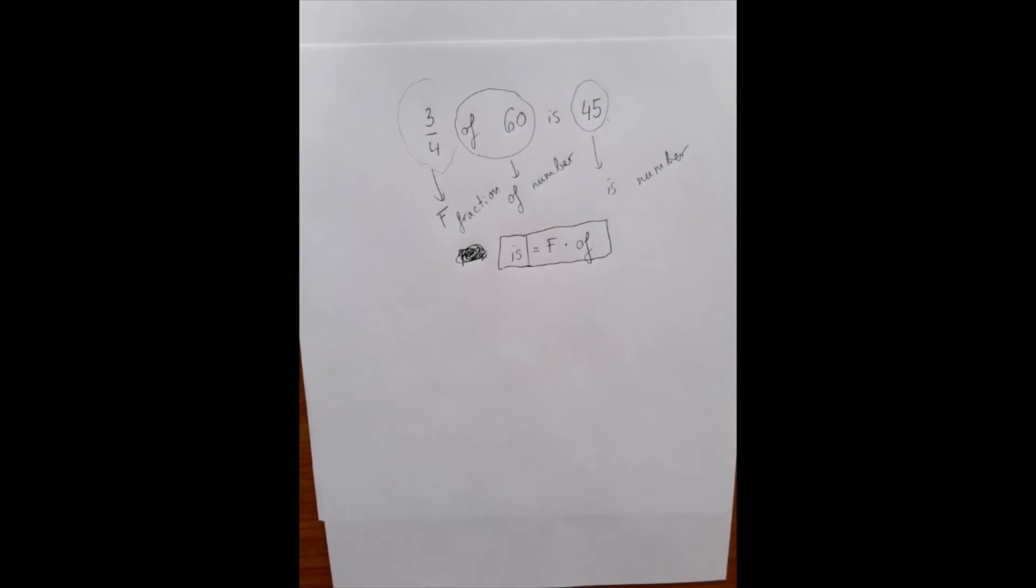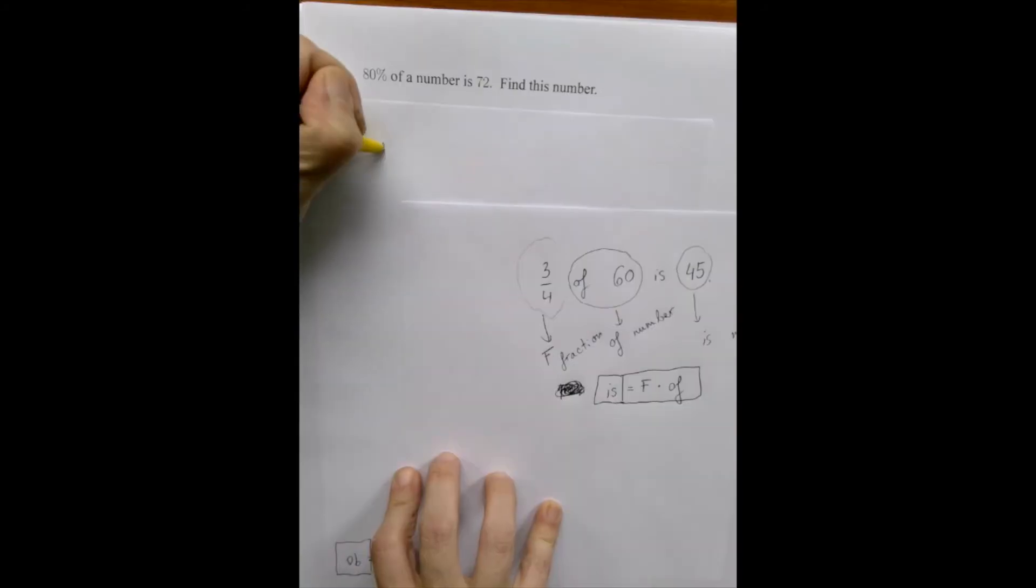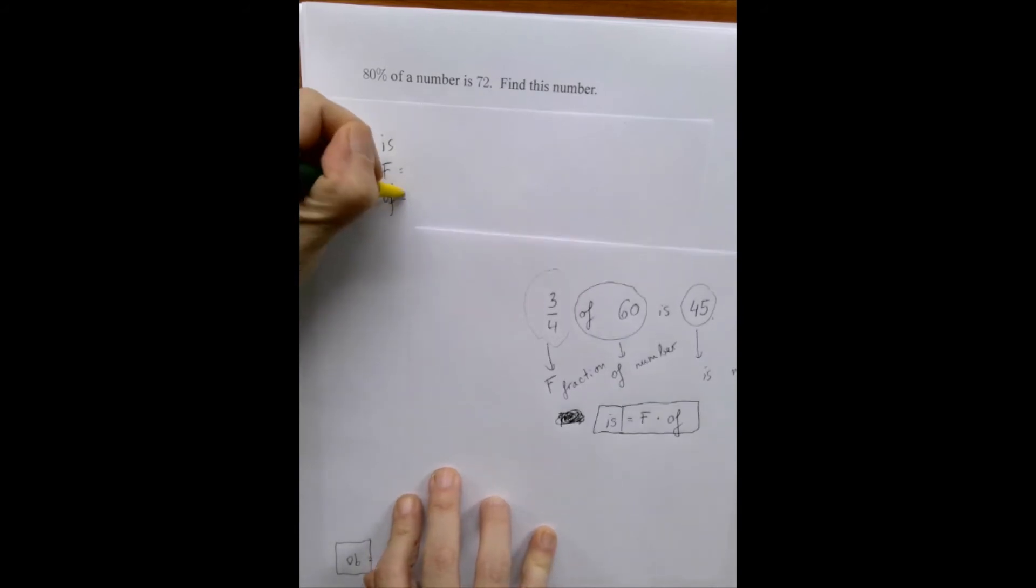In the sentence, 80% of a number is 72. If we go back, is is always fraction times of. So we need to sort out who is who in this picture.